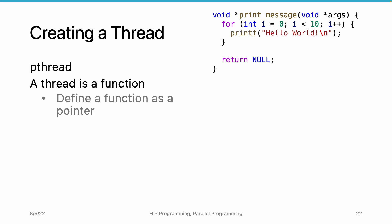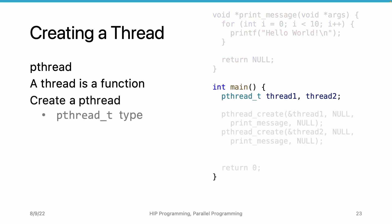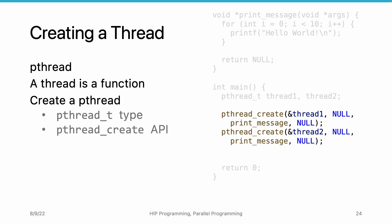We can create two threads that run the same print message function with the pthread API. In the main function, we first create two pthread variables, named thread1 and thread2. We store them as variables so that later on we can identify the threads. We use the pthread_create API to create and start threads. It takes four arguments; we only discuss the first and third here. The first argument is the pointer to the thread variable, and the third argument is the function we want to start as a thread.